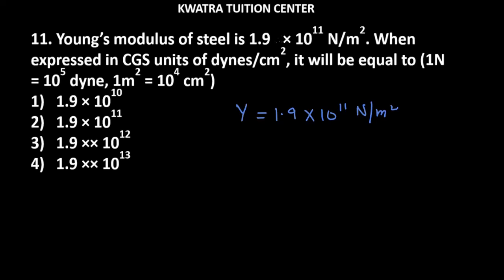We can convert Newton to dynes and meter square. To convert Newton to dynes, you need to multiply by 10^5. So we have 10^11 and 10^5.